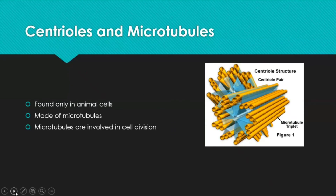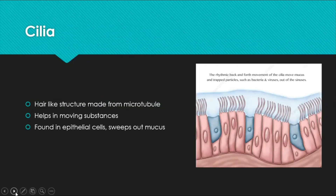Centrioles are organelles found only in animal cells, made of perpendicularly arranged microtubule triplets. These microtubules are involved in cell division. Cilia are small hair-like structures also present in ciliated epithelial cells in the trachea. In the trachea, goblet cells produce mucus that traps dust and pathogens from the air pathway. When the mucus becomes dirty, the cilia sweep it out of the pathway.